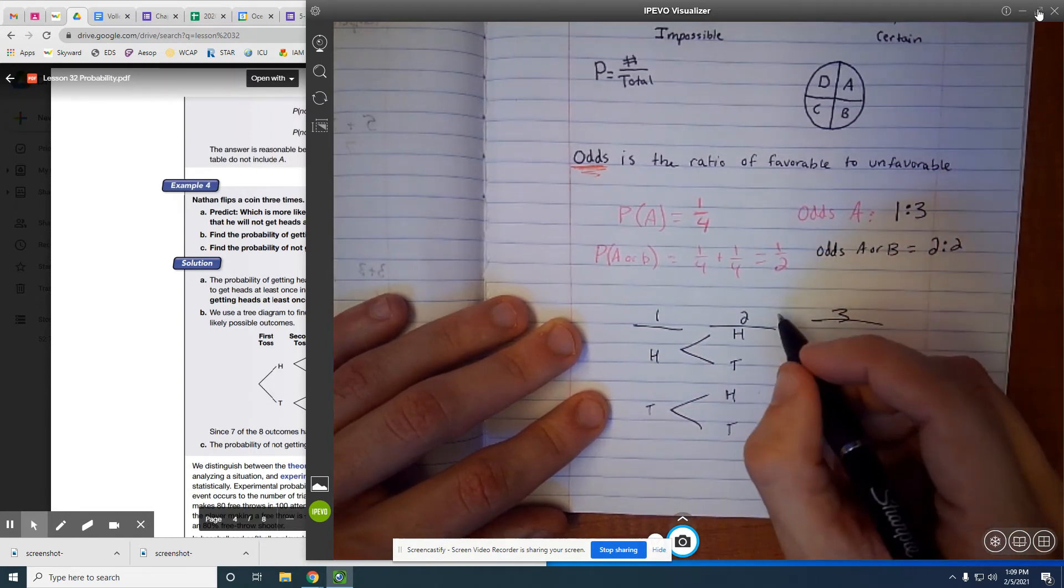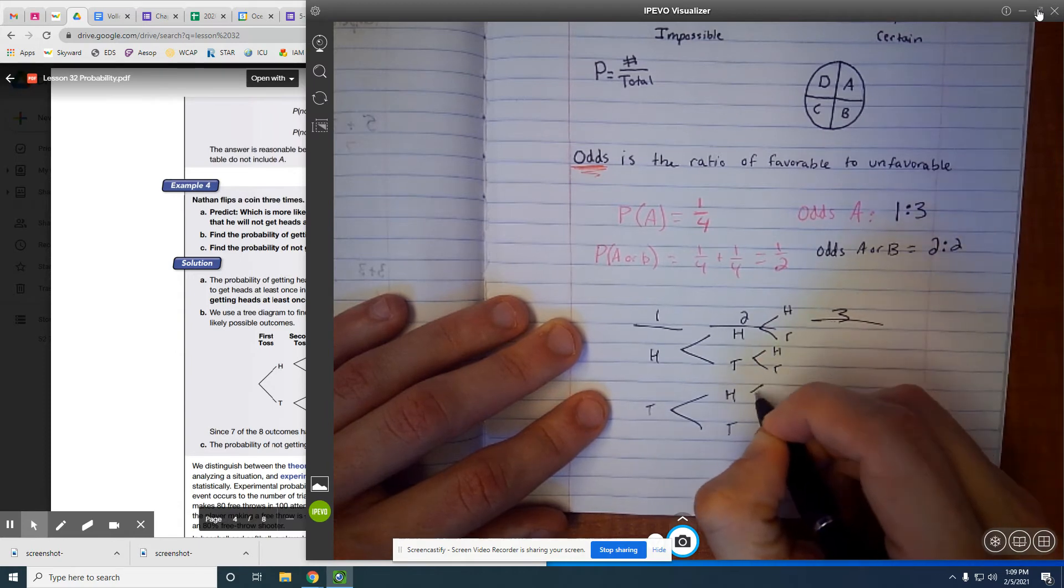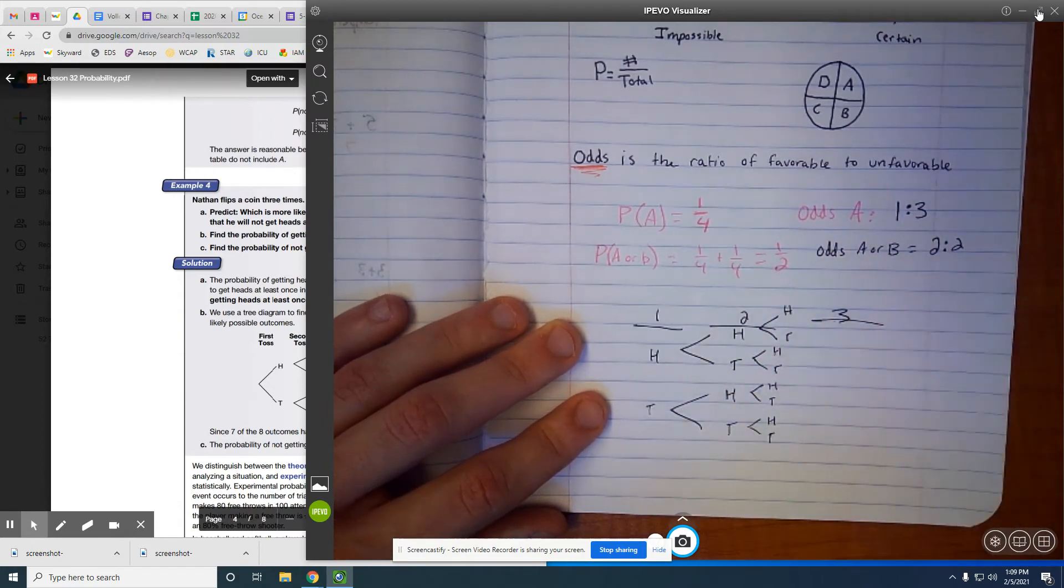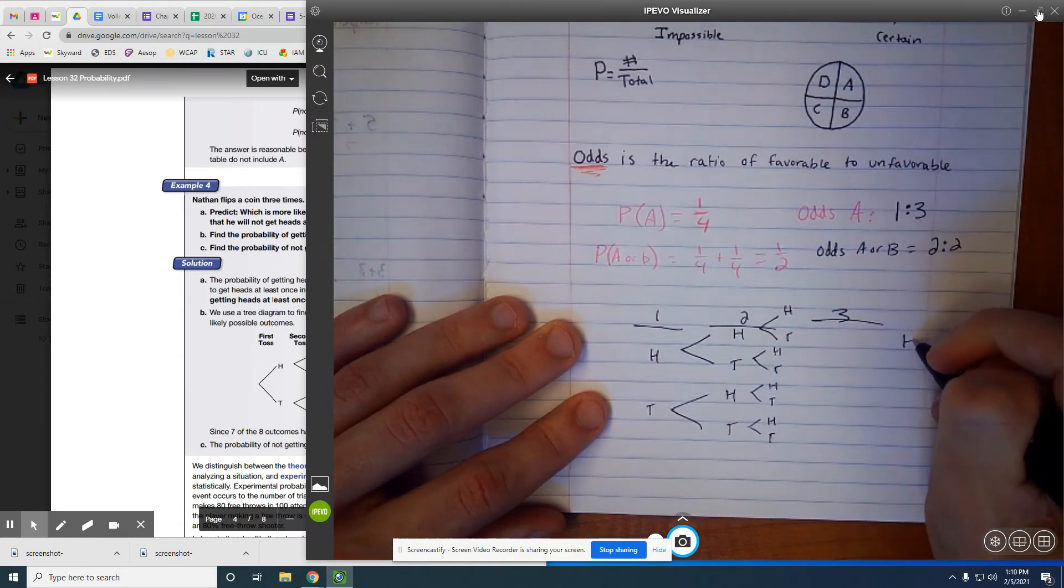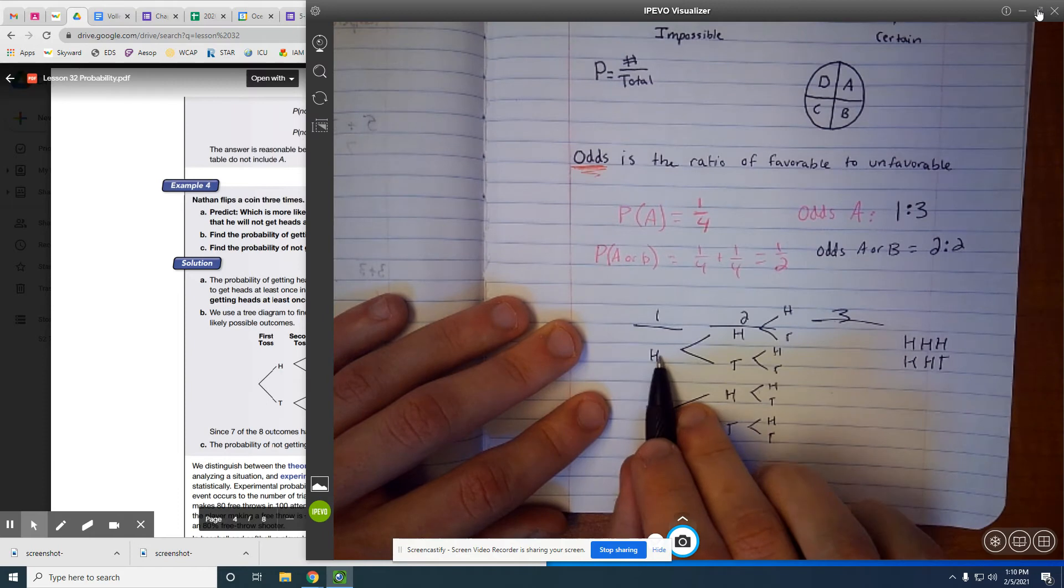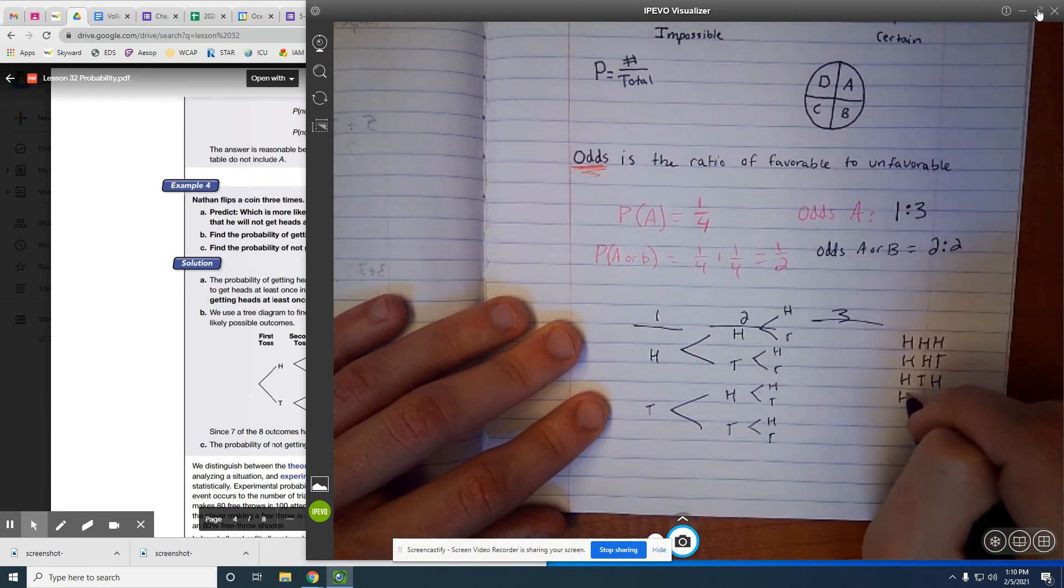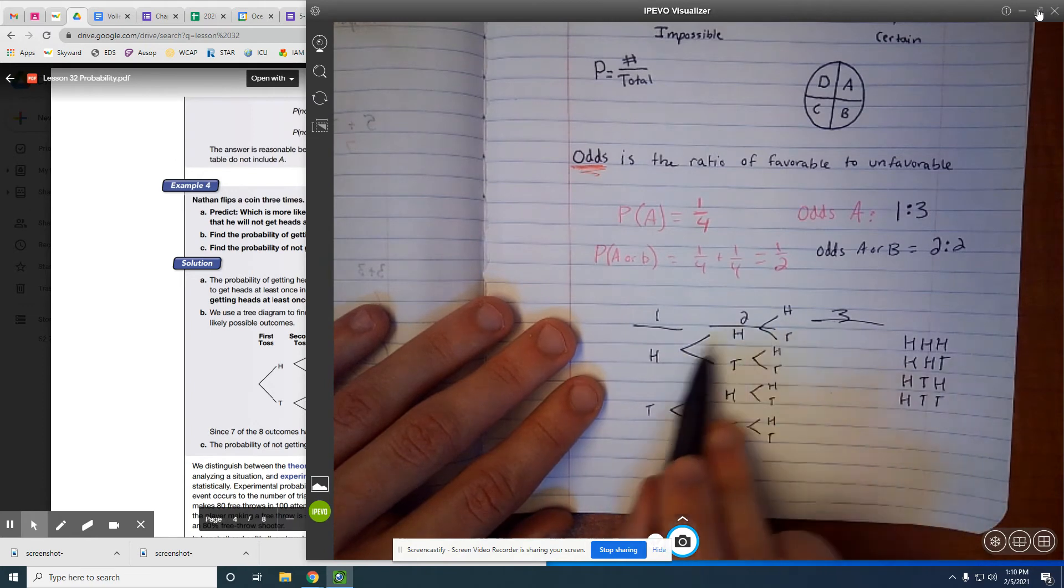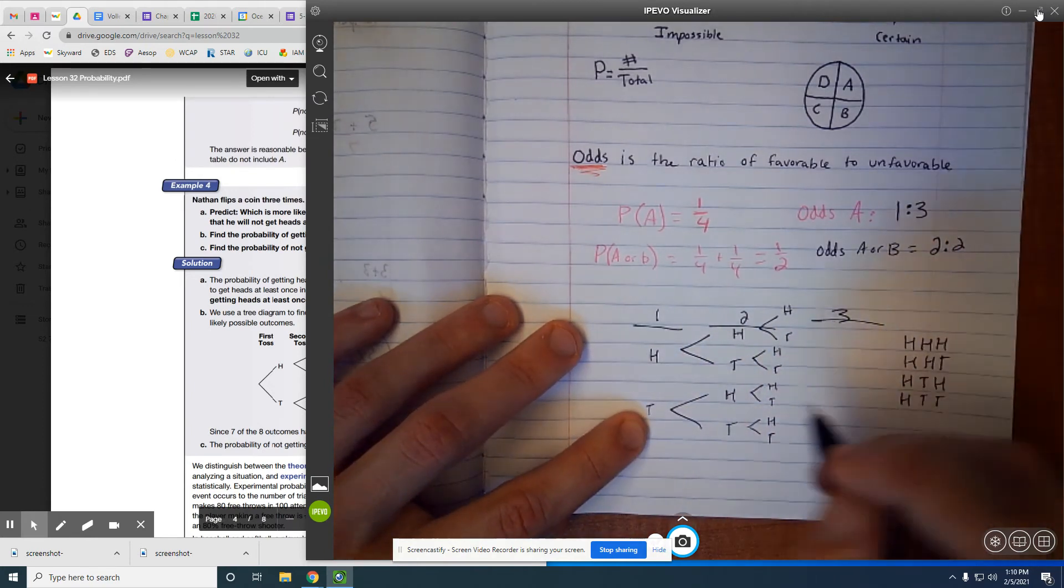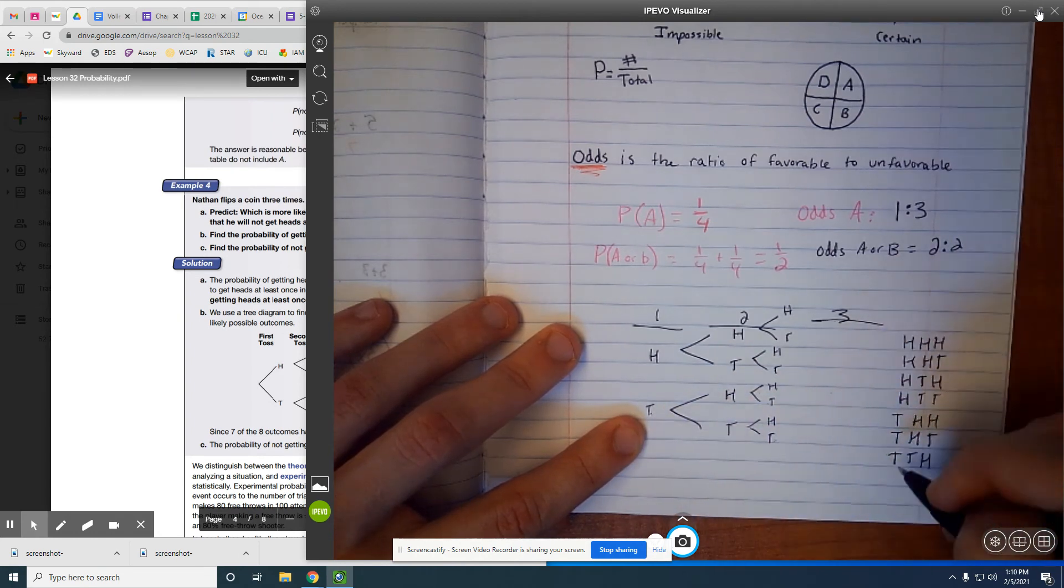As we get to that third one, though, we're really adding a whole bunch of stuff. So H, T, all of these are options. H, T, H, T. So let's write all these down. So this first one, we've got H, H, H. H, H, T. H, T, H. H, T, T. So that's all of them with H on the first part. One, two, three, four. So we should have four starting with T, too. So T, H, H. T, H, T. T, T, H. T, T, T. So these are all of the options.